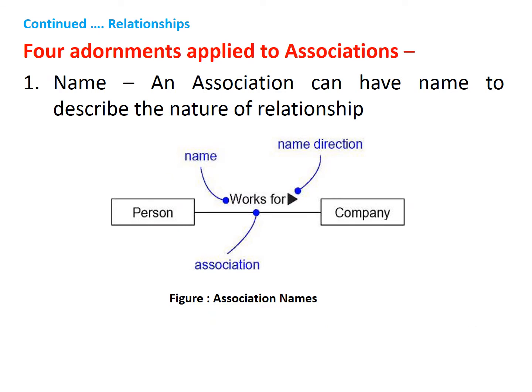There are four adornments that can be applied to the association. These adornments are name, role, multiplicity, and aggregation. The first is the name. An association can have a name which is used to describe the nature of the relationship. In this figure, there are two classes: Person and Company. The relationship between these two classes is the association relationship, and the association is named 'works for'. That is, we can read it as: a person works for a company.